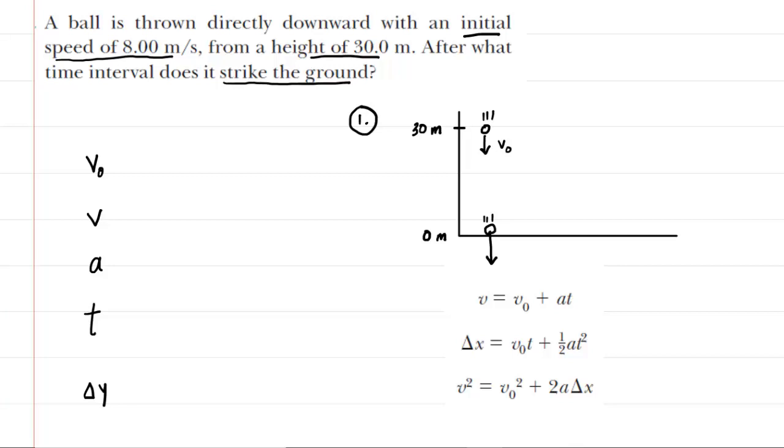So what we want to do is write down all of the known parameters, and that is our second step. There is a bit of a trick to this question because it says that the ball was thrown directly downward, but then it gives us a speed of positive 8 meters per second. Speed is always a positive quantity, so that's not surprising. But because the ball is thrown downward, we have to make sure that we indicate that its initial velocity is actually negative 8 meters per second. So make sure that you include that negative sign on the initial velocity because it's being thrown downward.